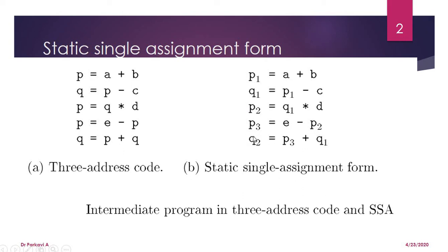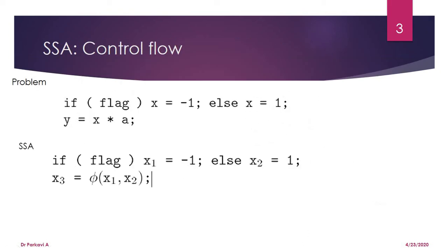The second time q value is overwritten, it will be written as q2. Here p and q values are used, so the most recent p value is p3, and the most recent updated q value is q1. In this way the SSA form will be written.